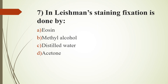Seventh question. Giemsa staining fixation is done by: Option A, Eosin; Option B, Methyl alcohol; Option C, Distilled water; Option D, Acetone. Answer is Option B, Methyl alcohol, which is methanol, used as a fixative. Eosin is an acidic stain used to stain cytoplasm. Methylene blue is a basic stain which stains the nucleus.